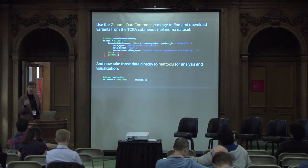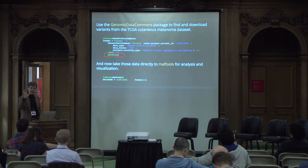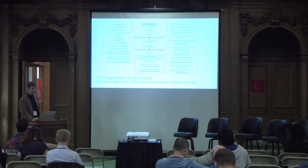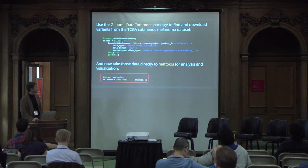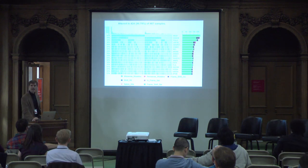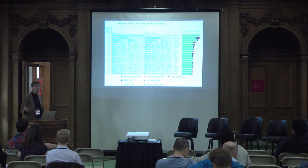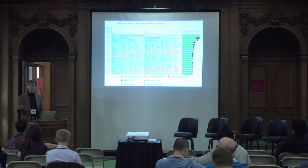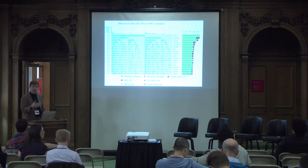Using a package already built into Bioconductor called MafTools, three more lines of code gets us a plot. With about ten lines, we've entirely reproducibly gotten data from the largest NCI repository and made a plot. If the data happens to change, we rerun the code and get new data and a new plot.